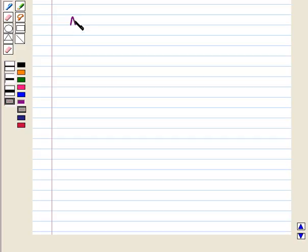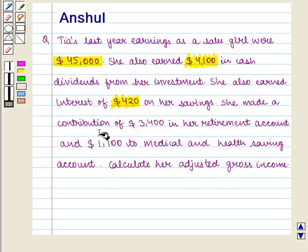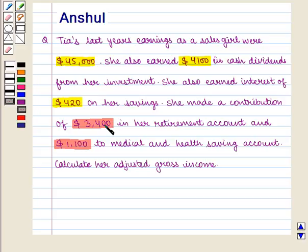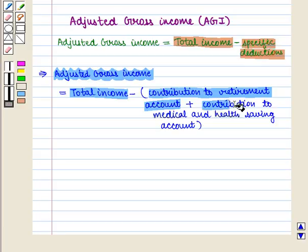The adjusted gross income is given by total income minus specific deductions. She made a contribution of $3,400 to her retirement account and $1,100 to a medical and health savings account. So we will subtract these amounts from total income. The adjusted gross income equals total income minus contribution to retirement account plus contribution to medical and health savings account.